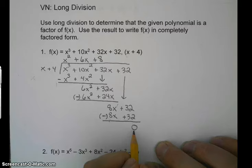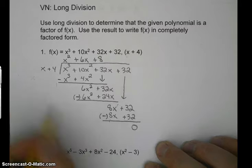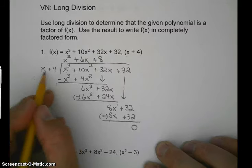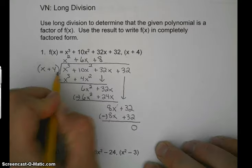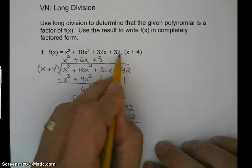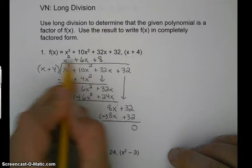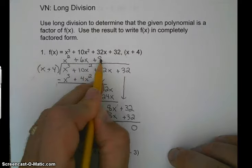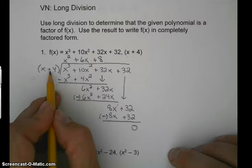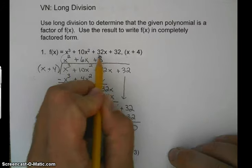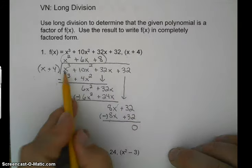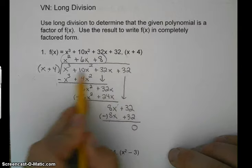So when we have a remainder of 0, we have just shown that x plus 4, this factor, goes into this polynomial evenly, this many times. So if I took x plus 4 times this, I would end up with this polynomial.